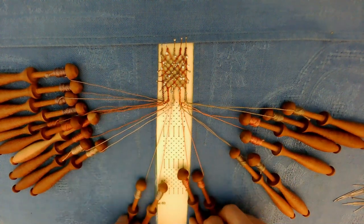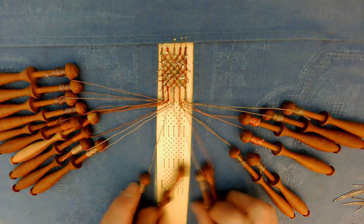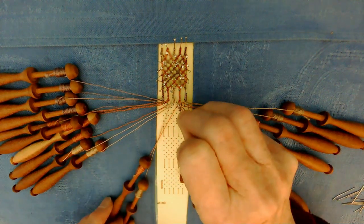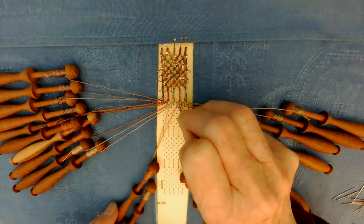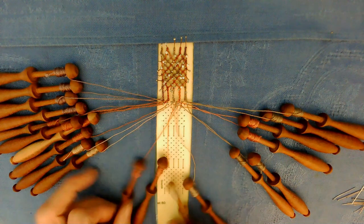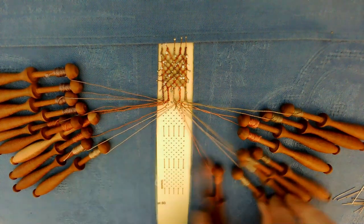Pull down the next two pairs, one from each pin. Cross, twist, pin, cross, twist, twist. Move them to the side.